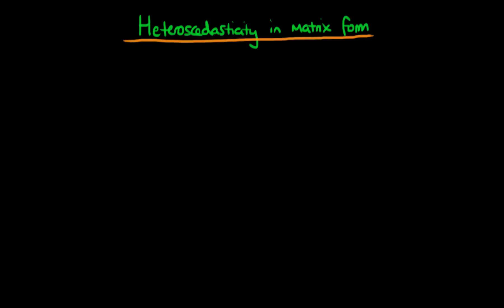In this video I want to explain how we can represent heteroscedasticity in the matrix formulation of econometrics. That's going to lead on to, in the next few videos, a discussion of how one can form BLUE estimators in the presence of heteroscedasticity and how we can represent those in matrix form.